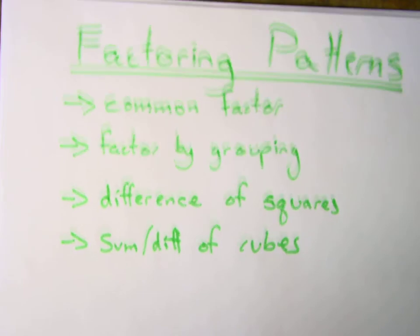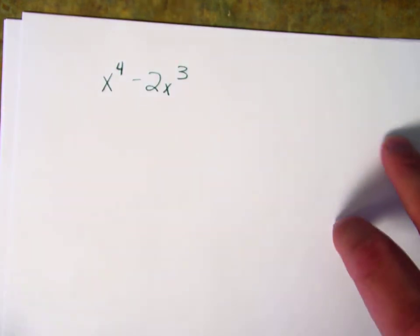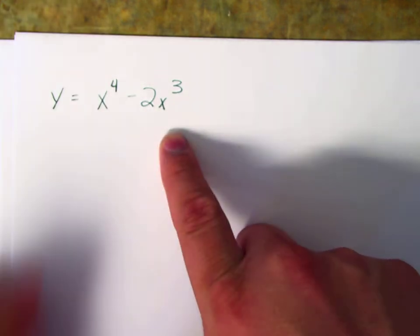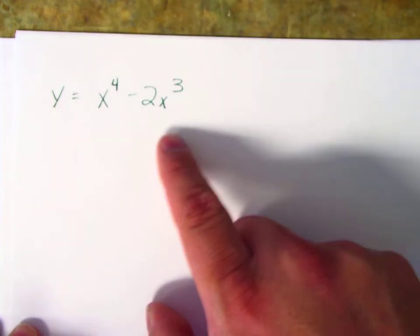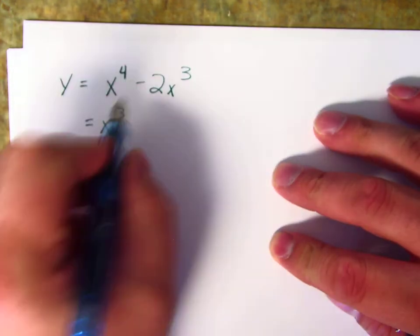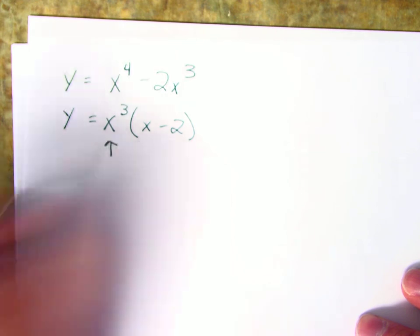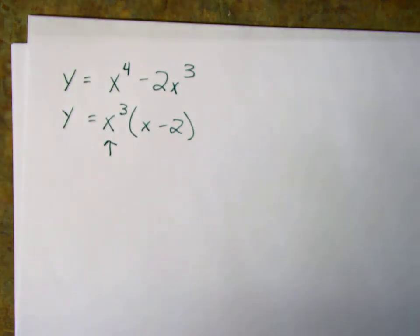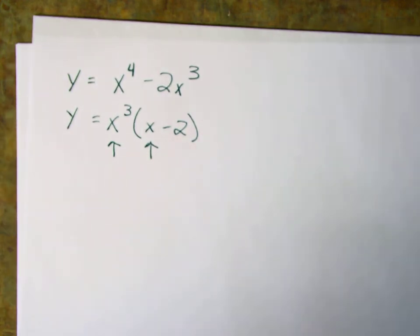Our first example is x to the fourth minus 2x to the third. This shows us the first thing we want to look for on all of these: a common factor. x to the fourth has four x's, x to the third has three x's, so we have a common factor of x to the third. We factor that out and get x cubed times (x minus 2). We've got a zero at x equals zero with multiplicity three and a zero at two with multiplicity one.